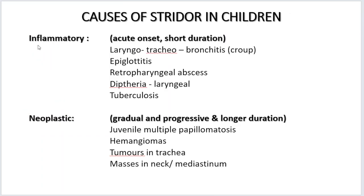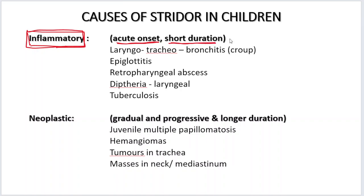Inflammatory causes mean there is an infection causing the inflammation or swelling. When there is an infection, you can expect that the onset is acute — the Strider is not going to develop over weeks. It is going to be a period of hours or days and the duration is going to be short. The child presents to you in a short duration — maybe one or two hours. The baby was fine in the morning and started developing Strider from the last two or three hours only.